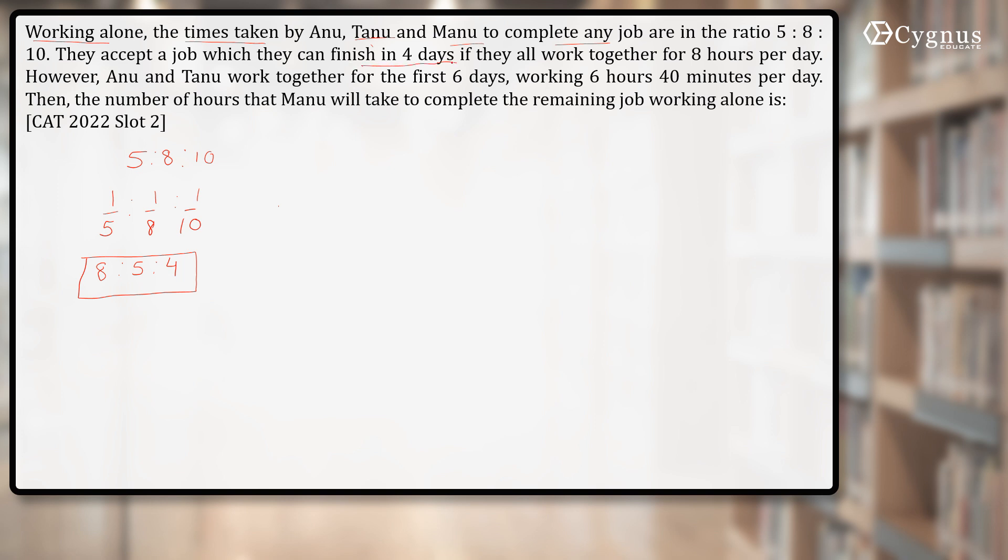They can finish the whole work in four days if they all work together for 8 hours per day. If you assume this is one hour's work of Anu, Tanu and Manu, the total one hour's work will become 8 + 5 + 4, and they work for 8 hours and 4 days.